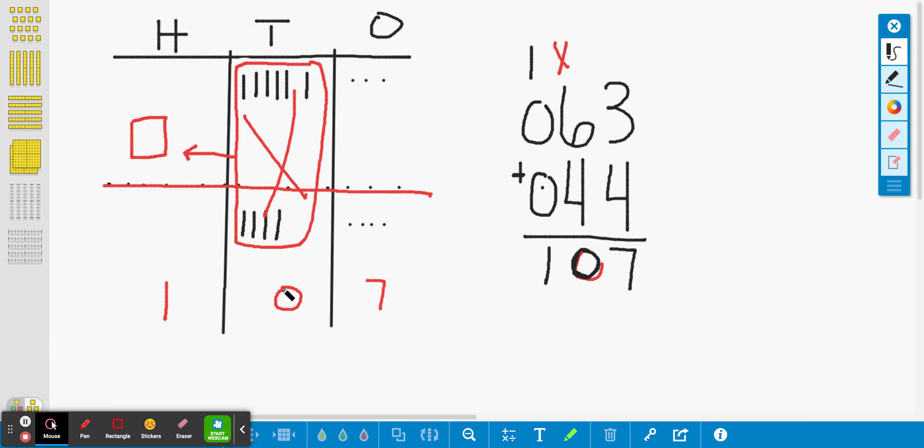So we didn't have any tens left. Now, sometimes you will have tens left and then you have to count how many there are. But here we didn't have any. We traded them all for a new hundred. And that was right here. So my answer is 107. It's 107. Now you can do this in your seesaw today.